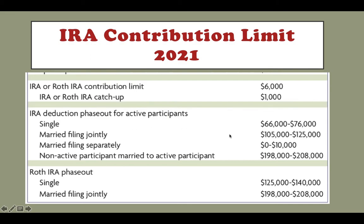For traditional IRA, no matter how much money you make, you are eligible to make a contribution. However, if you are participating in a retirement account at your workplace and you make too much money, your contribution will not be tax deductible — it will be an after-tax contribution. When you file your tax return, the software will always allow you to make the contribution, and the custodian will also always allow it.